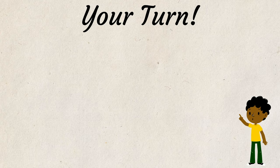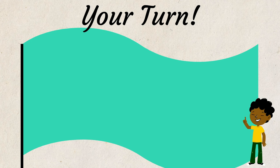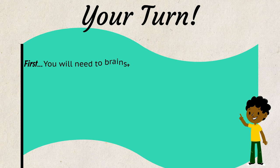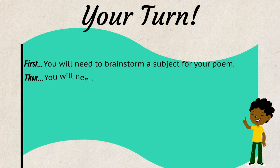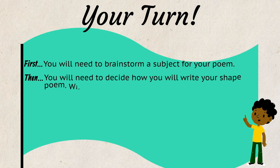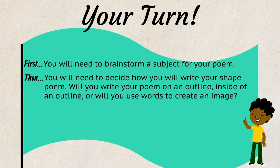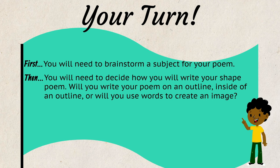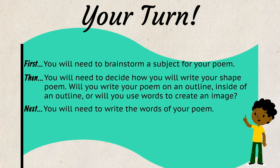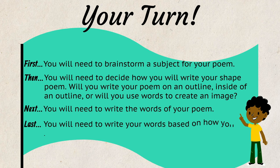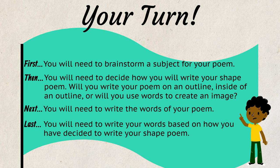Now it's your turn to write a shape poem. First, you will need to brainstorm a subject for your poem. Then, you will need to decide how you will write your shape poem — will you write your poem on an outline, inside of an outline, or will you use words to create an image? Next, you will need to write the words of your poem. Last, you will need to write your words based on how you have decided to write your shape poem.